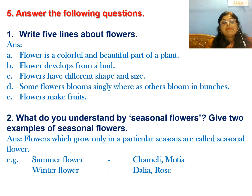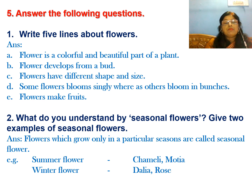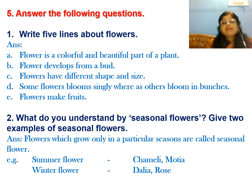Question five: write five lines about flowers. Flower is a colorful and beautiful part of a plant. Flower develops from a bud. Flowers have different shapes and sizes. Some flowers bloom singly — meaning only one flower blooms — whereas some flowers bloom in bunches, meaning many flowers are together in one bunch. Flowers make fruits.